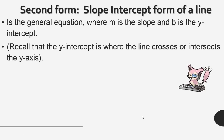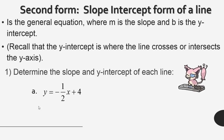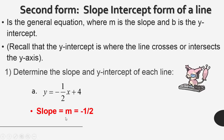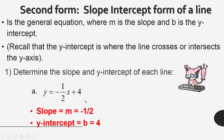Recall that the y-intercept is where the line crosses or intersects the y-axis. In example number 1, we're asked to determine the slope and y-intercept of each line. In part A, y is equal to negative one-half x plus 4. In this equation, the slope M is negative one-half — we do not write the x because we're just looking at the slope itself, the change in y over the change in x. The y-intercept B is at the end of the equation, and in this case it is 4.